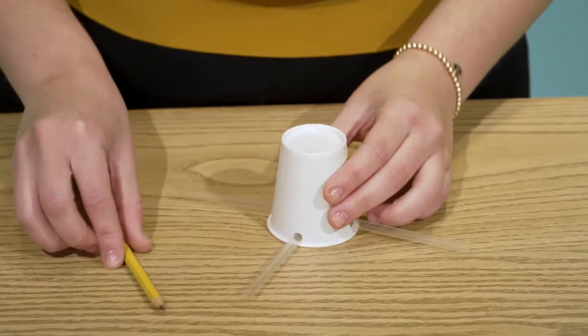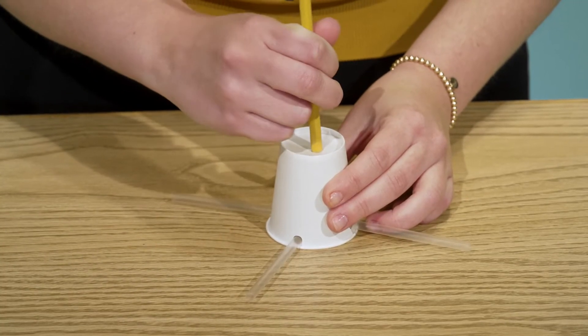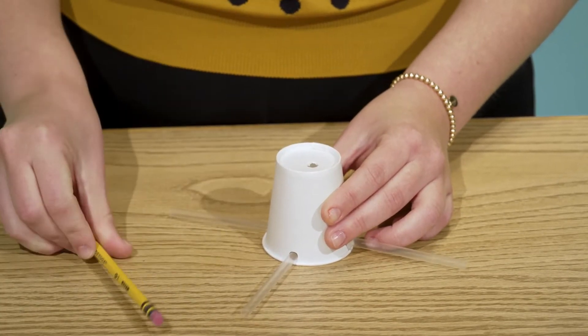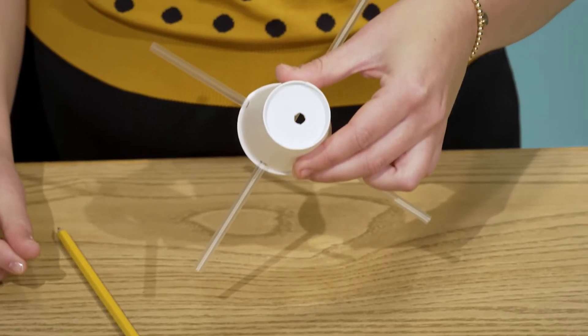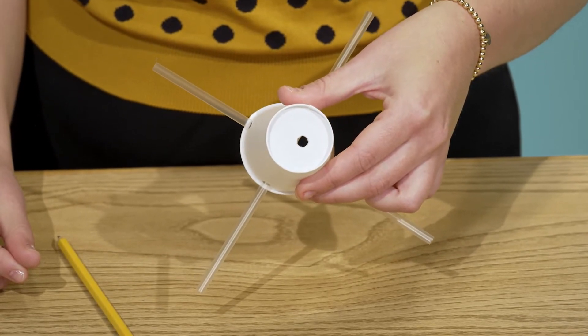Flip that cup upside down on a table and poke a hole in the center of the bottom of the cup with your sharpened pencil. We'll set this cup aside for now and move on to the other four cups.